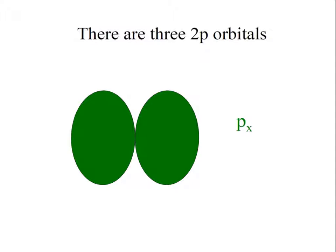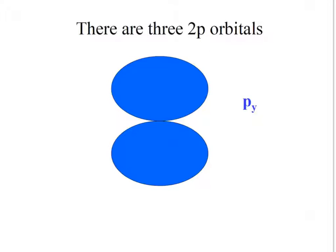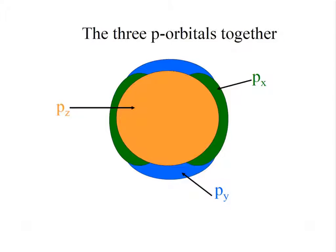There are three p orbitals: px, py, and pz. They sit on different axes. When you overlap them, they're all the same shape. It's still kind of a sphere. That's why when we have models of atoms, they're usually circular. The 3p orbitals are going to be larger than the 2p. The 4p orbitals will be larger than the 3p.